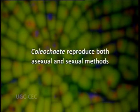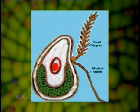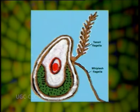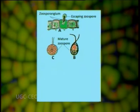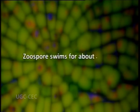Now we come to its reproduction. In Coleochaete, reproduction occurs through both asexual and sexual means. Asexual reproduction takes place by means of zoospores, which are produced in ordinary cells usually in spring and summer seasons. A single zoospore is produced in each cell. The zoospores are large, ovate, biflagellate, and uninucleate. They possess a single chloroplast but no eyespot. The zoospore is liberated through a round pore formed at the apex or through a short papilla of the parent cell.